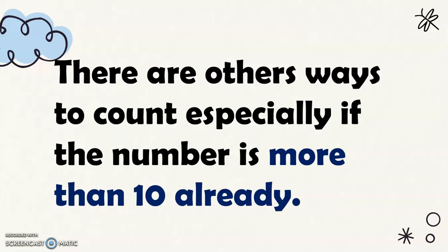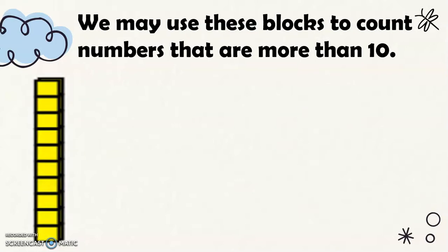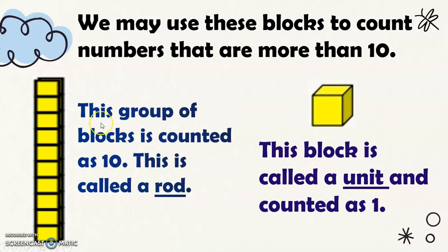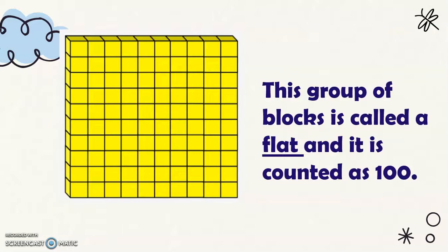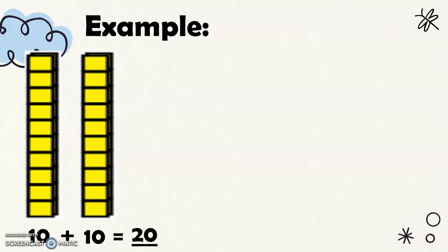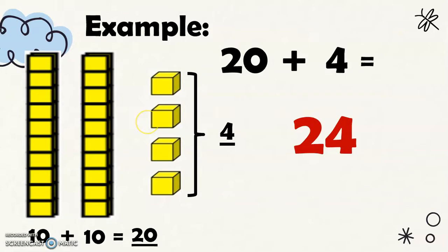There are other ways to count, especially if the number is more than ten already. We may use these blocks to count numbers that are more than ten. This block is called a unit and is counted as one. This group of blocks is counted as ten and is called a rod. This group of blocks is called a flat and it is counted as one hundred. For example, we have here two rods or twenty blocks and then four units, so we have twenty plus four equals twenty-four blocks in all.